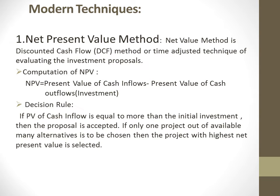The decision rule for NPV: if the present value of cash inflows is equal to or more than the initial investment, the project is accepted; if it is less, the project is rejected. If more than one project is available, the project with the highest NPV will be selected from the given alternatives.